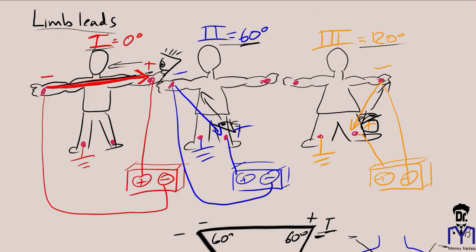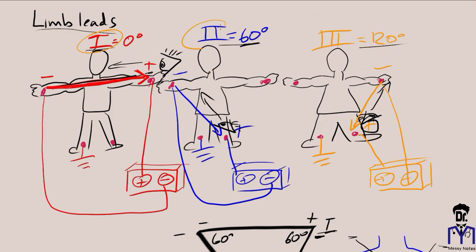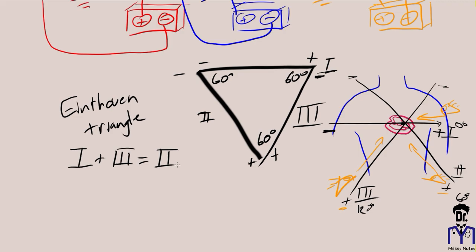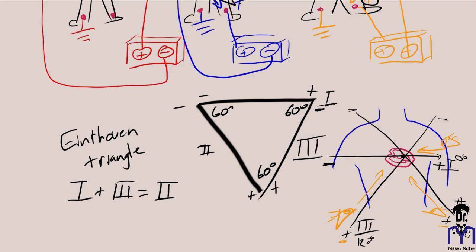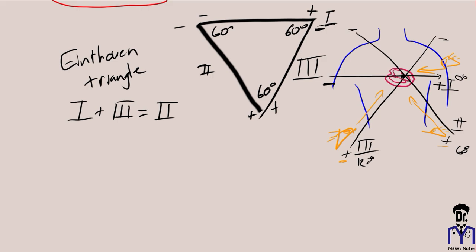The EKG machine doesn't actually measure all leads — it only needs to measure Leads I and II, then it can find Lead III. It does this using Einthoven's Law: Lead I plus Lead III equals Lead II. This works because of Kirchhoff's Voltage Law, which states that the sum of potential differences around any closed loop is zero. Since Einthoven's triangle is a closed loop, this relationship holds.